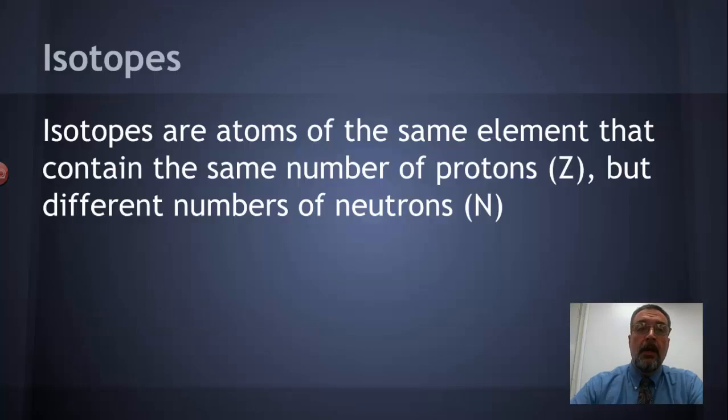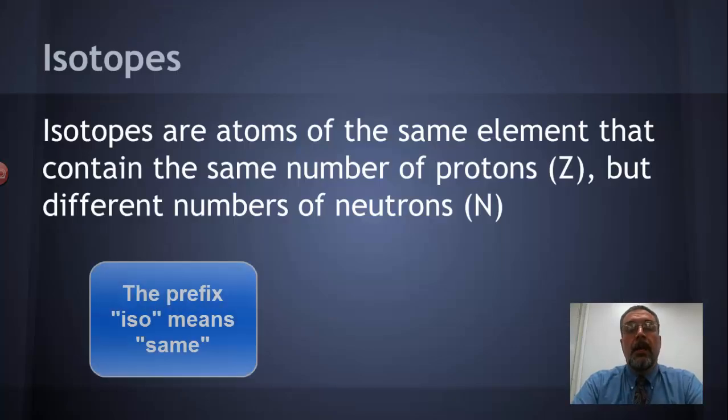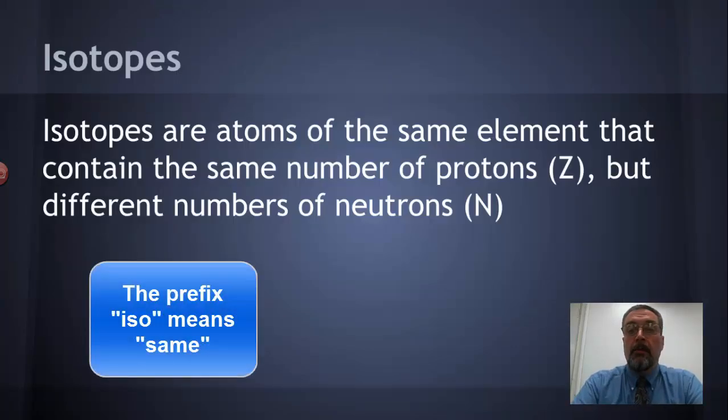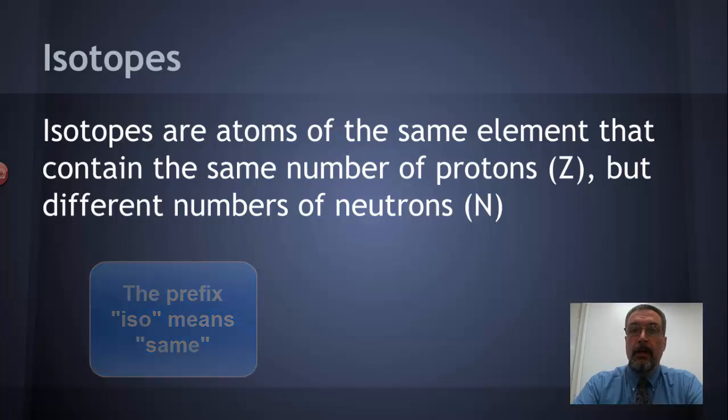So we'll start with the definition. Isotopes are defined as atoms of the same element that have the same number of protons, that's the same atomic number, usually represented by the letter Z, but they have different numbers of neutrons, represented by N.